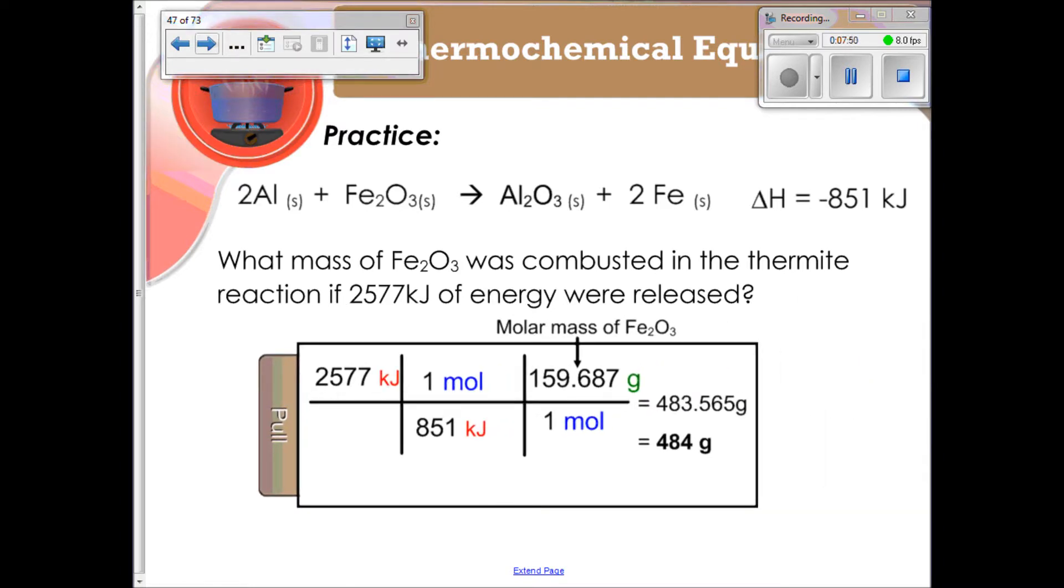So the question said, what mass of Fe2O3, or iron 3 oxide, was combusted in the thermite reaction if 2,577 kilojoules of energy were released? So that's our given, 2,577 kilojoules. Then we know that for every 851 kilojoules,